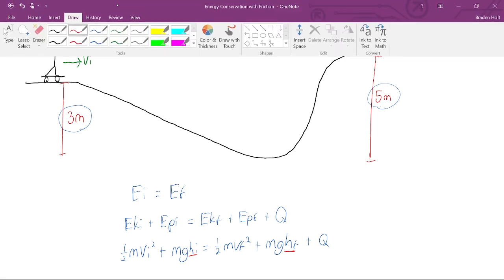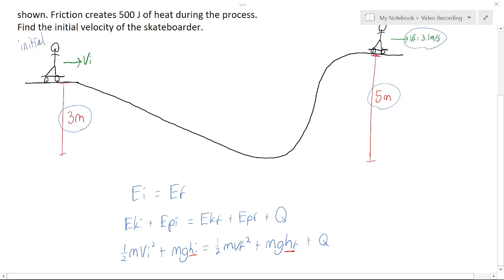And right now we're measuring the height from here. This is our height equals zero. We're saying this is the lowest point.